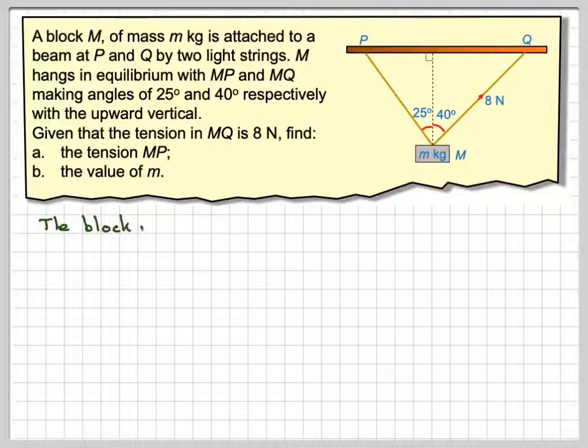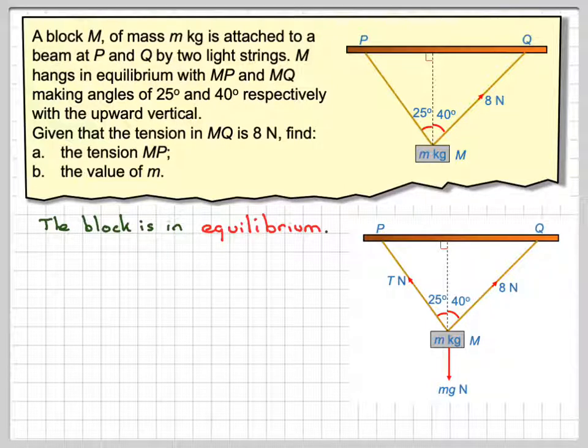The important thing is the block is in equilibrium. If we draw a diagram and label in the forces, we know this is 8 newtons. We have a force acting downwards here which is mg newtons, which is the weight of the block.